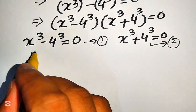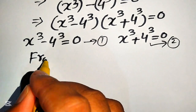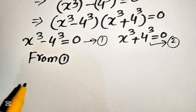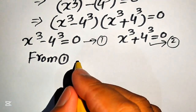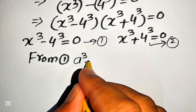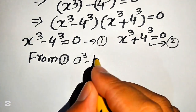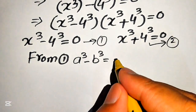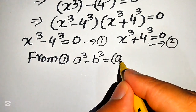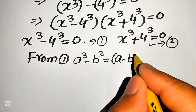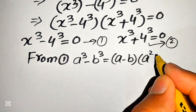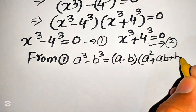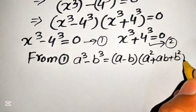Now we focus on equation number 1. We can apply the formula: a cubed minus b cubed equals to a minus b times of a squared plus a b plus b squared.